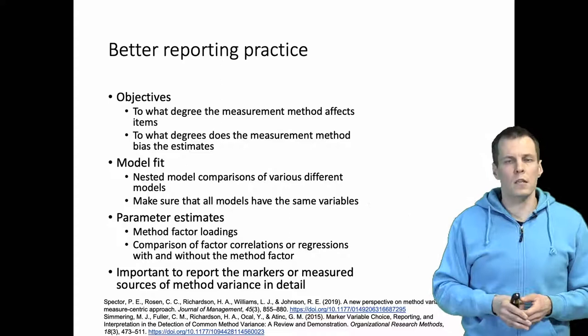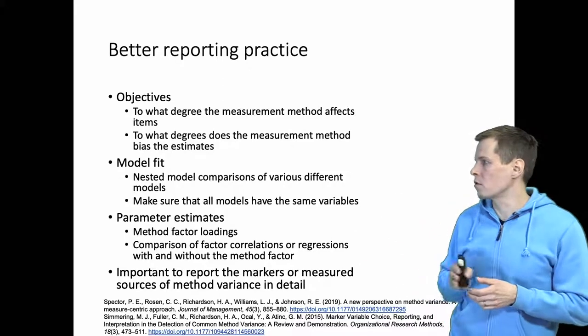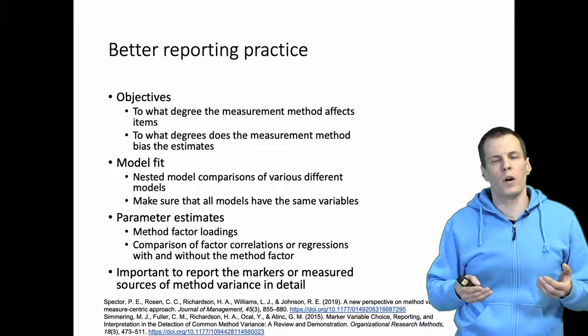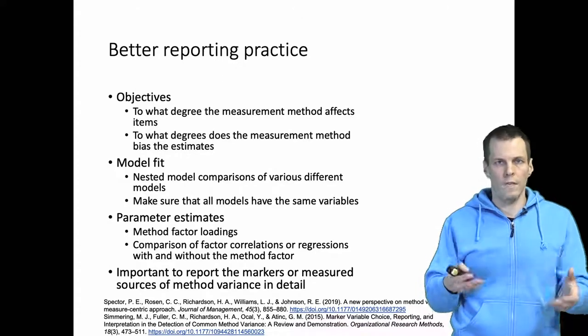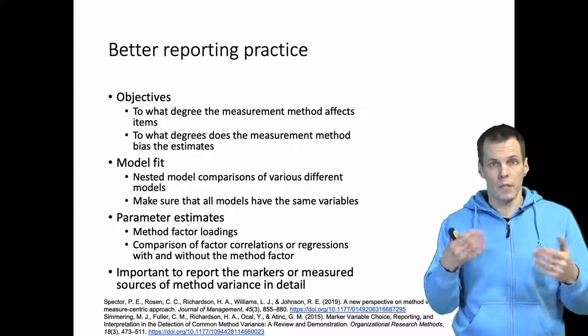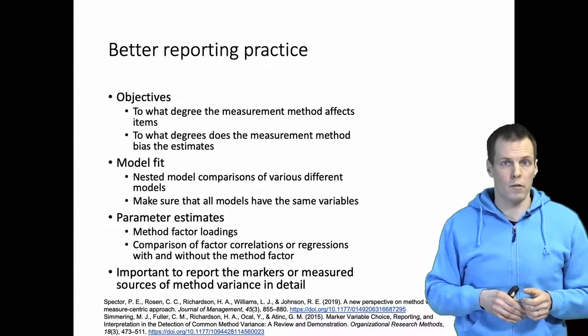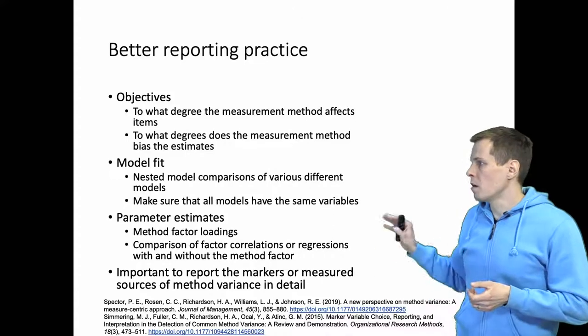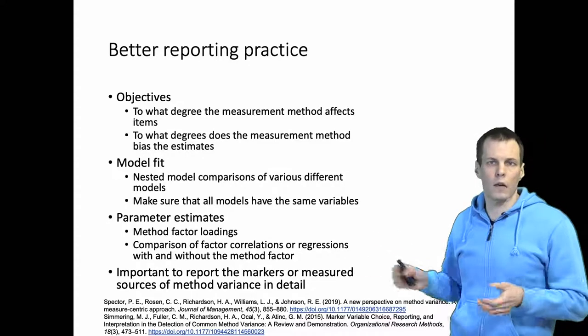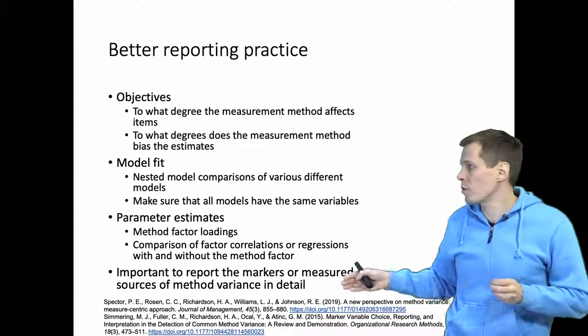Model fit, various nested model comparisons are useful for understanding how the method factor affects the items and Williams' 2010 article talks about different modeling strategies and make sure that all models have the same variables. In a model where you assume that the method factor does not have an effect you should still have the marker variables in the model and have a factor for those marker variables, simply allow that factor to be uncorrelated with all the factors and not load on the items. So that should be your comparison model. Williams 2010 talks about this comparison. For parameter estimates you look at method factor loadings and you compare factor correlations or regressions with and without method factor. This is not very common and I couldn't find any articles that would actually show a table side by side but many articles do report and compare these two.